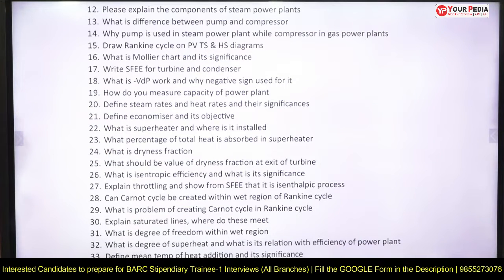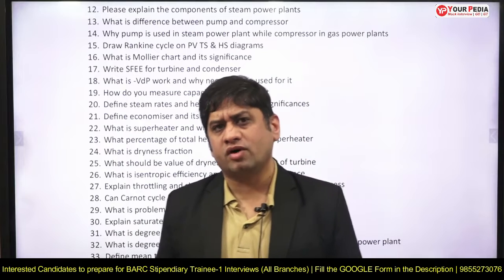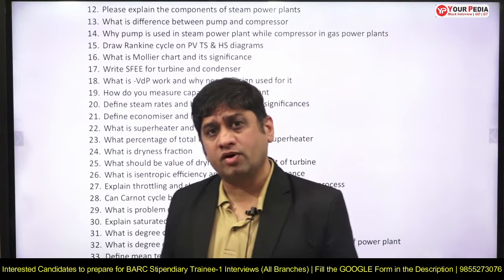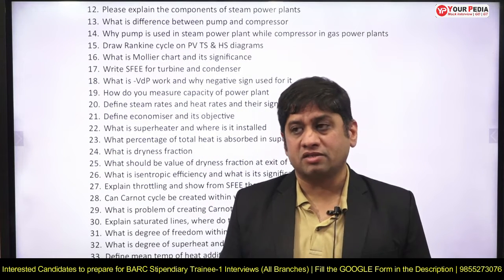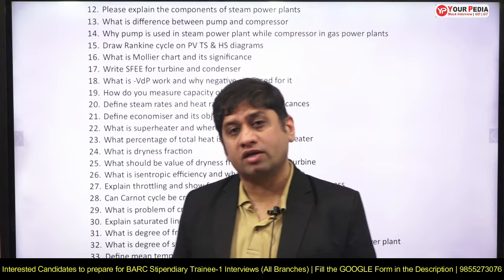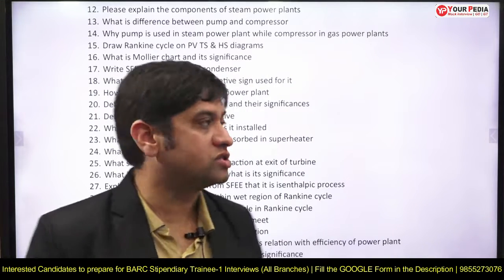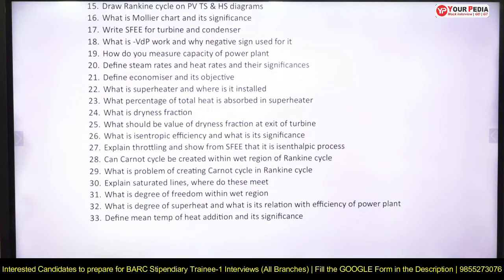Draw the Rankine cycle on PV, TS, and HS diagrams. What is the Mollier chart and what is its significance? Write the steady flow energy equation for turbine and condenser. What is VdP work and why is the negative sign used? Negative VdP work applies to open systems like centrifugal compressors, while PdV work applies to reciprocating compressors in closed systems. What is the method to measure the capacity of a power plant?